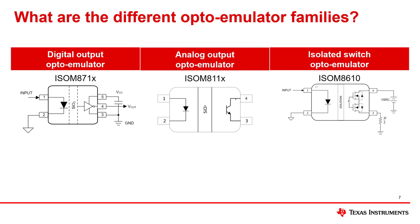The ISO-M8110 is an optoemulator that has an analog or a current-based output. This has several variants that provide different CTR ranges. The ISO-M8610 is an optoemulator that has integrated FETs. The input of this optoemulator family controls the back-to-back MOSFETs inside the device.